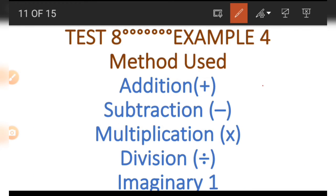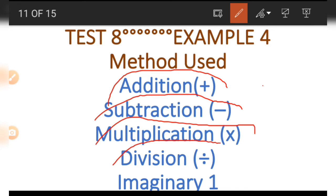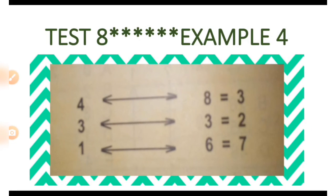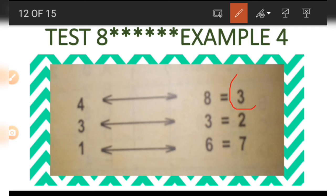We can also do the reverse to find other numbers. In example number four, we use addition, subtraction, multiplication, division, and an imaginary number one. There are three sub-examples, each on its own line. Let's start with the last number on the first line, which is three. To get the three we use the other two numbers on the line and the divide symbol.